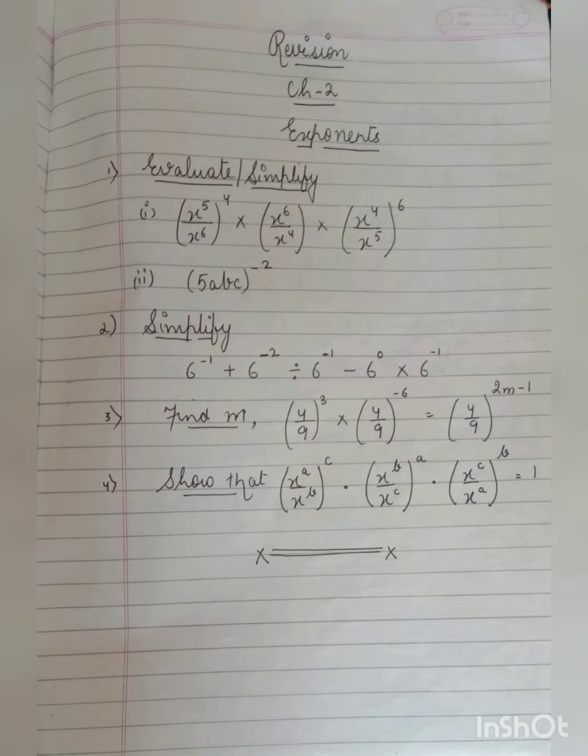Next question. 6 to the power minus 1 plus 6 to the power minus 2 divided by 6 to the power minus 1 minus 6 to the power 0 multiplied by 6 to the power minus 1.